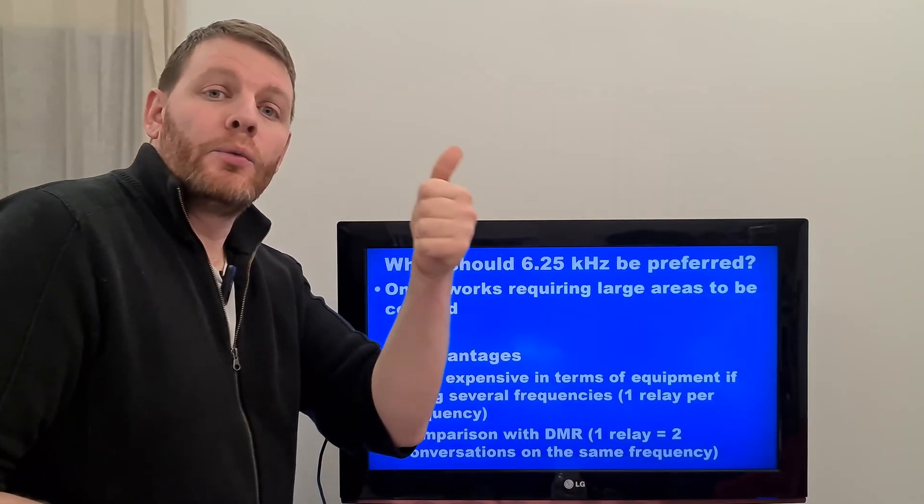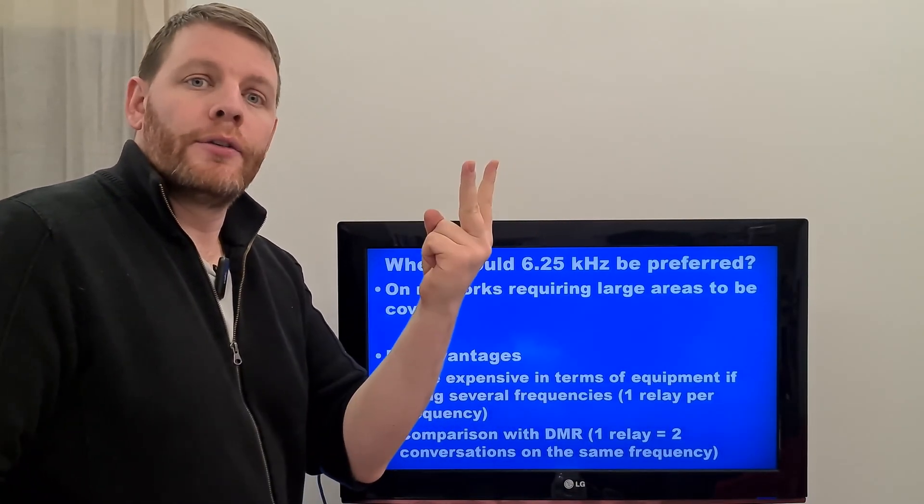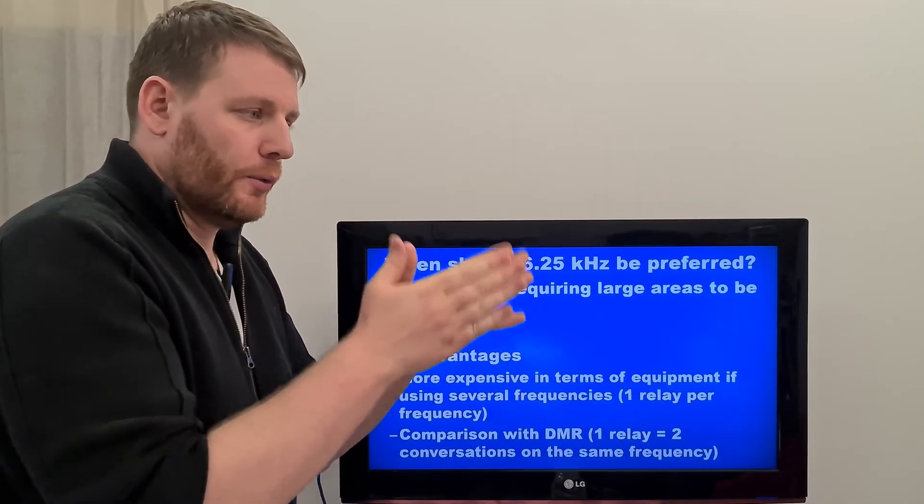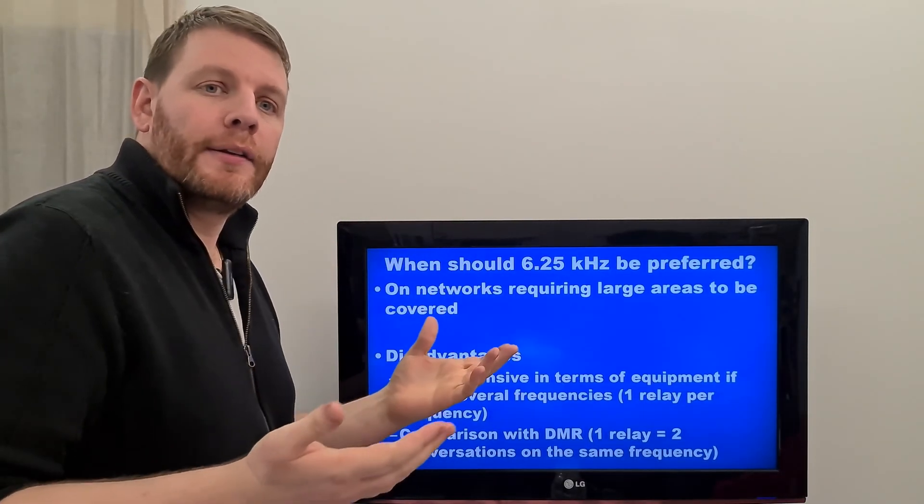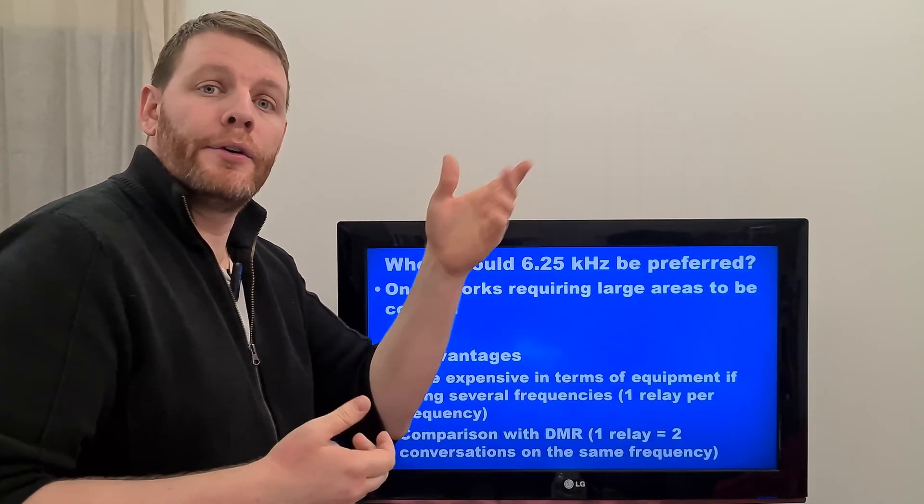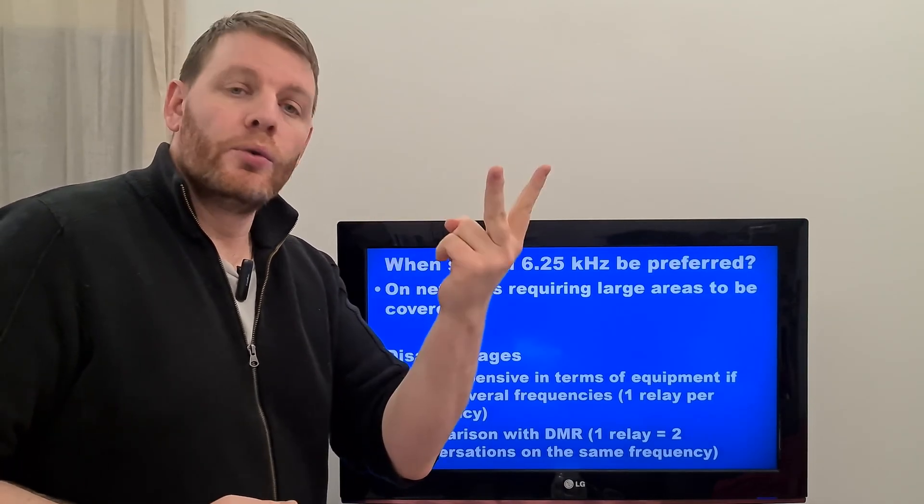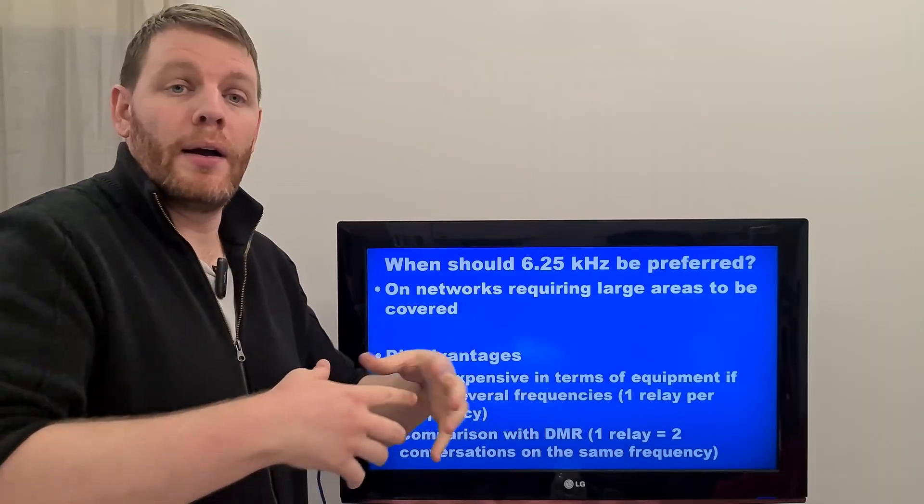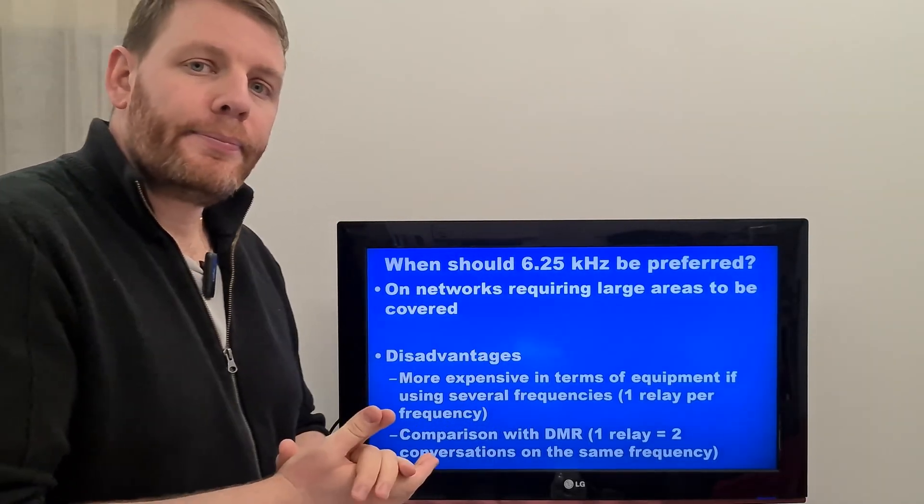One repeater, one DMR repeater, you can have two conversations at the same time on the same frequency with one repeater. If you want to make the same functionality with an NXDN, for example, or 6.25 kHz technology, any technology, you have to use two repeater. So, it's more expensive because you have to buy more equipment.